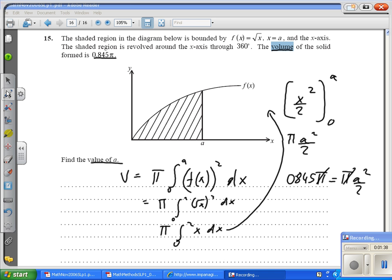The π cancels out. Move it over there, 0.845 times 2 is 1.69 equal to A squared. And so the square root of this should give us an answer of A equal to 1.3. That is the answer for A.